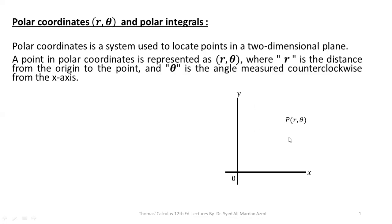In this diagram, we have a two-dimensional plane with a point whose coordinates are r and theta. r is the distance of this point from the origin, and theta is the angle measured in the counterclockwise direction with the positive x-axis.